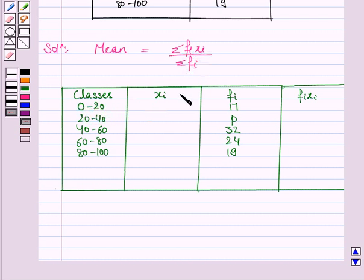It is 0 plus 20 divided by 2 that is 10. This is 20 plus 40 divided by 2 that is 30. 40 plus 60 divided by 2 is 50. 60 plus 80 divided by 2 is 70. 80 plus 100 divided by 2 is 90.